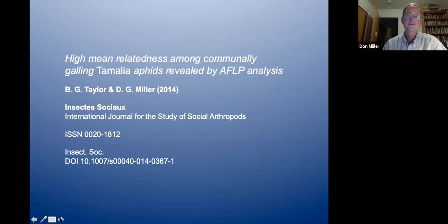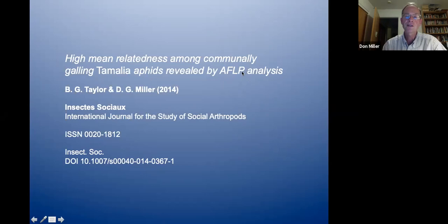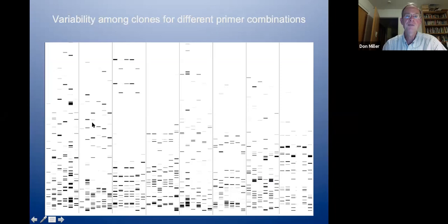This is the paper we published from his master's thesis: 'High Mean Relatedness Among Communally Galling Tamellia Aphids,' revealed by a molecular marker called an Amplified Fragment Length Polymorphism — essentially a DNA fingerprint technique that separates kin from non-kin. Published in a journal for the study of social arthropods. The results show high variability among aphid clones using different primer combinations, confirming the markers are useful for separating kin from non-kin.